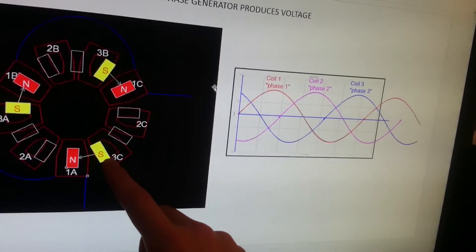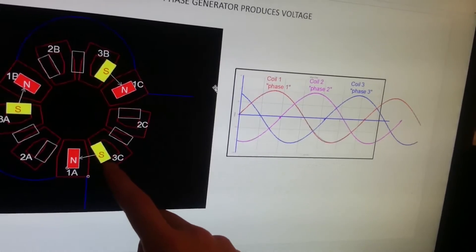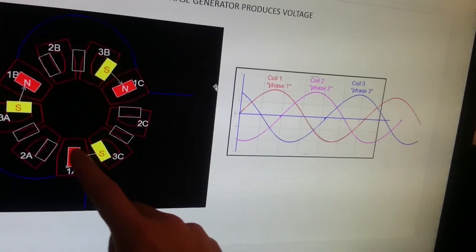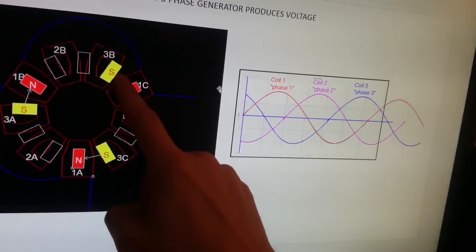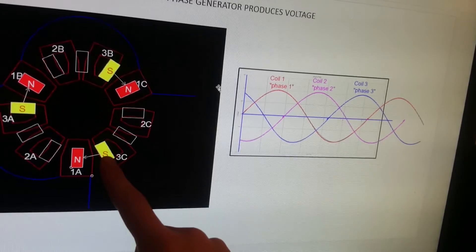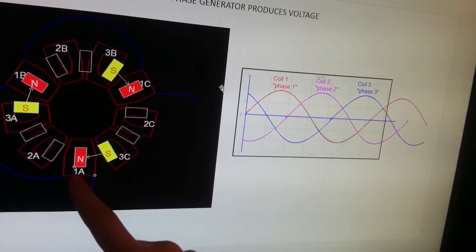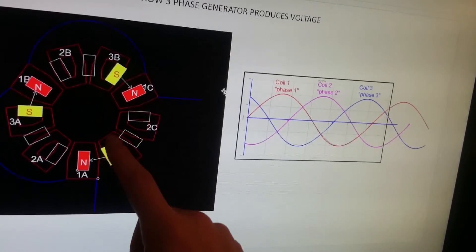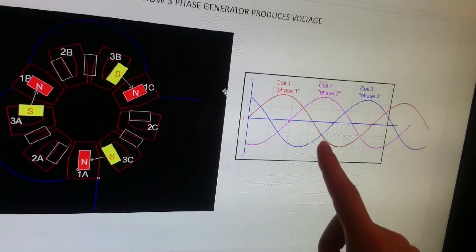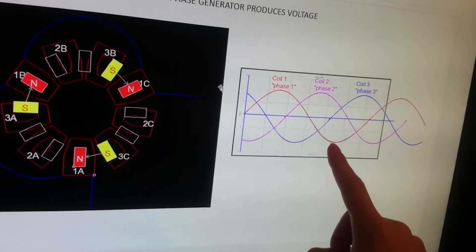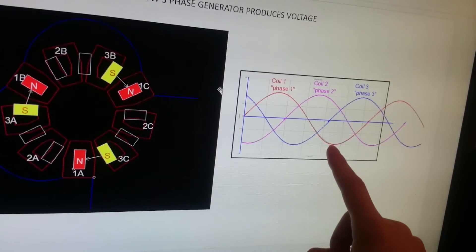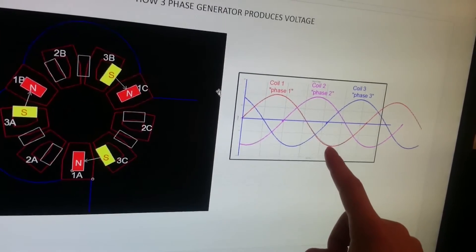The second set of magnets are south pole—these yellow ones. When they come to coil 1A, 1B, and 1C, we have minus 24 volts, shown by this downward curve.